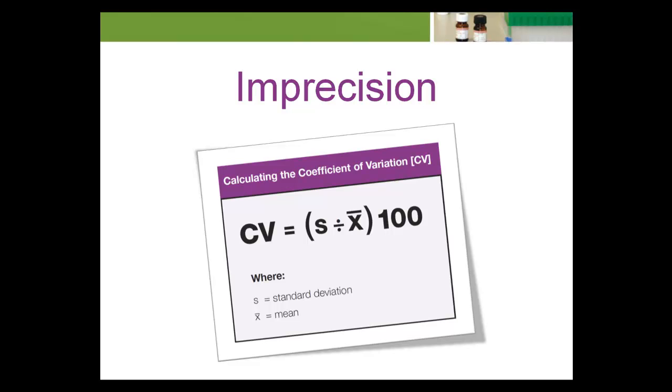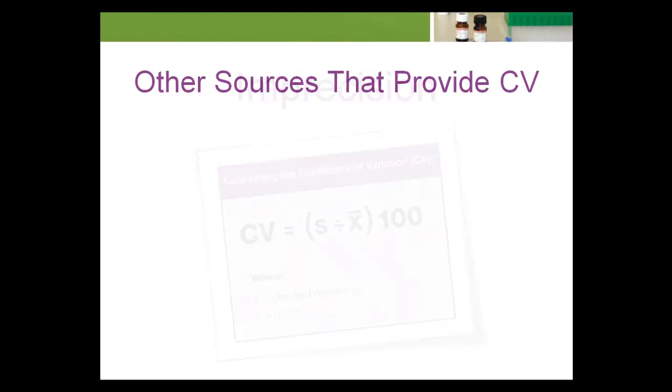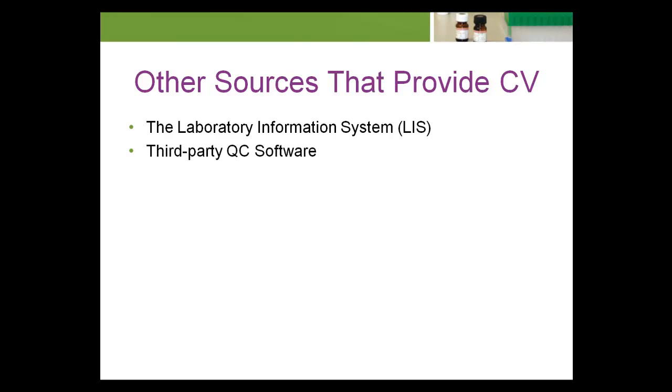A laboratory can perform the calculation to obtain the CV percent, or alternatively use one of the following sources to obtain the information: The Laboratory Information System, third-party QC software, interlaboratory reports, external quality assessment reports.